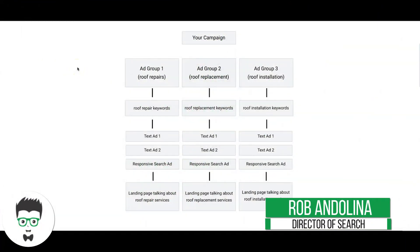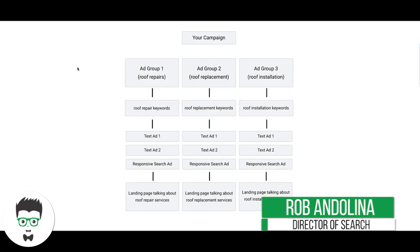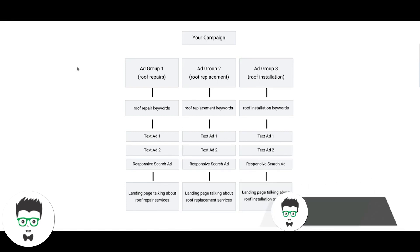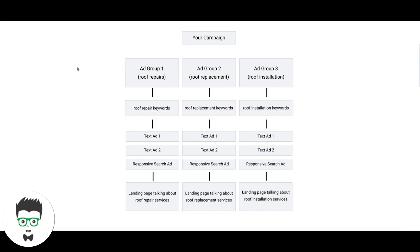Hey guys, Rob from Clicks Geek. In today's video we're going to go through Google Ads structures and how to structure your Google Ads campaigns. This is probably the number one thing we always get from other agencies — people come to us and their campaigns are not structured correctly. They have one ad group with 50 keywords, or five ad groups with a bunch of random keywords and one ad per ad group. There's a right way and a wrong way to do this, so I'm going to walk you through the proper structure to build all of your campaigns.